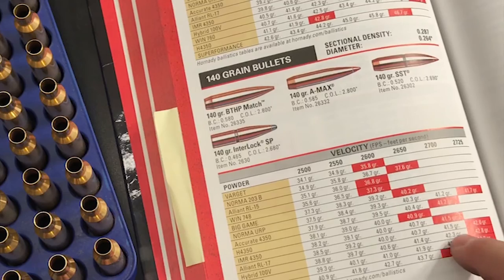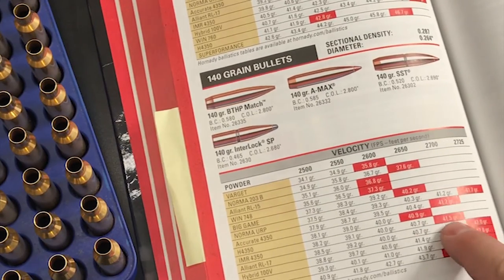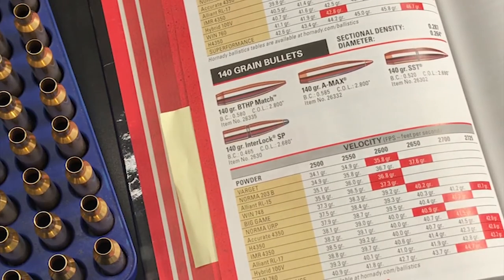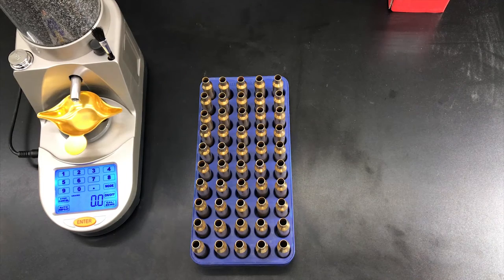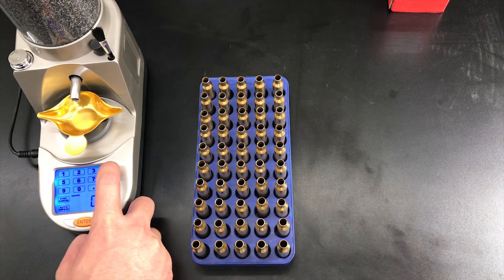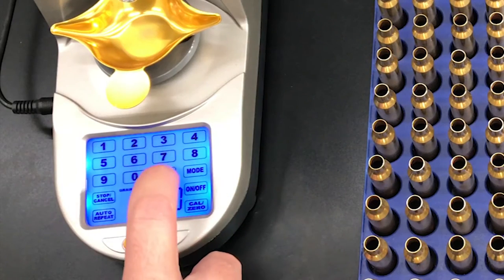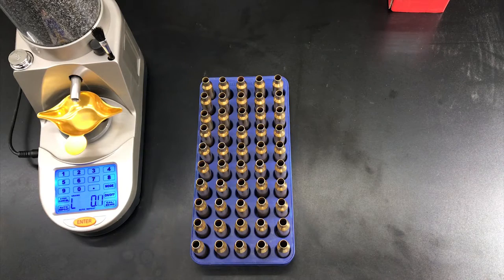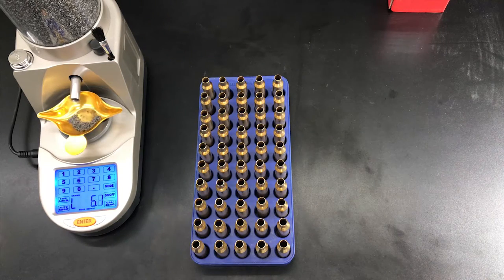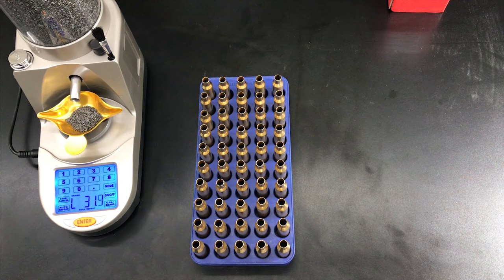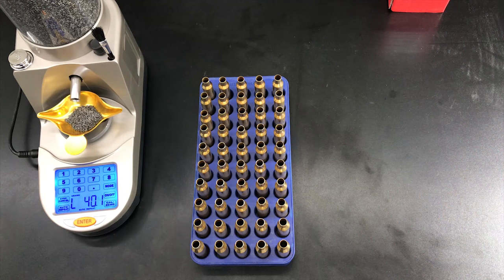We're trying to get up there, so we're right under the maximum charge weight, 2,650 feet per second. The way that this works is we're going to punch in how many grains we want to dispense, so in this case 40.5, and hit auto repeat, hit enter. It's gonna start dispensing our powder, should stop at 40.5.